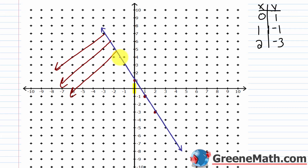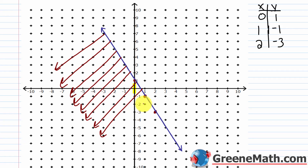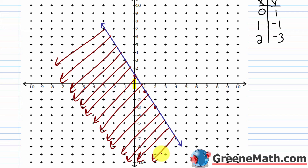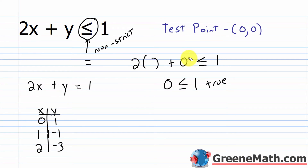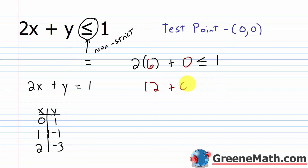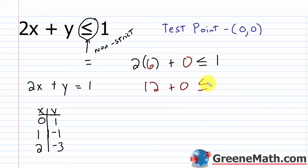The shaded area represents the solution region. Anything above the line is the non-solution region. Try it yourself: pick a point like (6, 0), which is in the non-solution region. Plugging in 6 for x and 0 for y: 2 times 6 is 12, and 12 plus 0 is not less than or equal to 1. That's false — confirming the non-solution region.